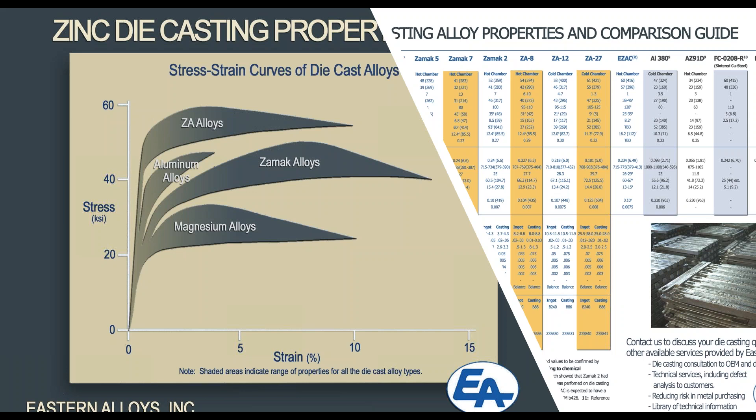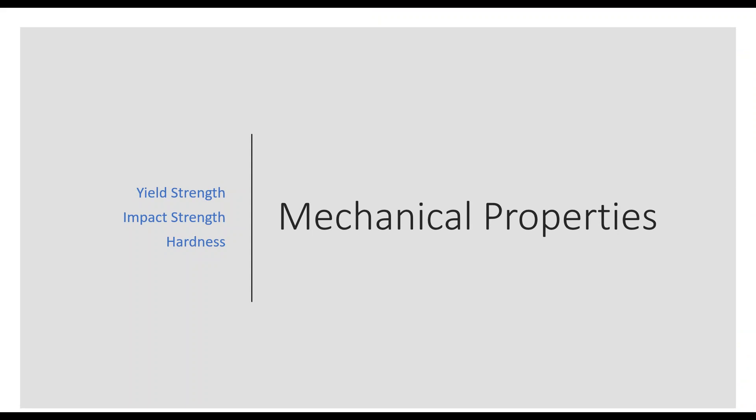Eastern's four-page Zinc Die Casting Property Guide gives more details of each of these zinc die casting alloys. Let's start with some of the mechanical properties. In the following slides, the zinc alloys will be on the left group, other cast alloys will be in the center group, and properties of plastics will be on the right.